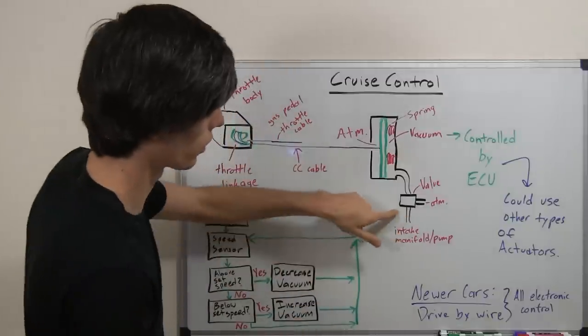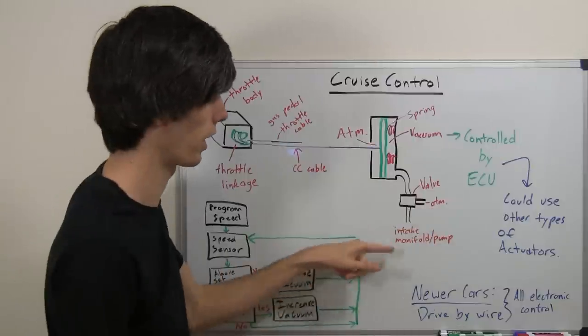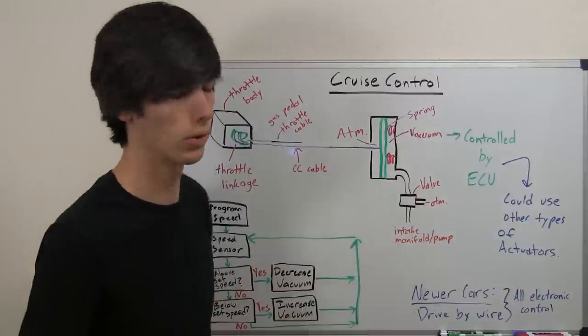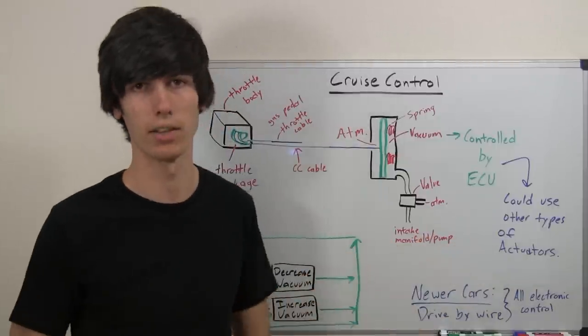So you can control the vacuum using a valve that can manipulate between atmospheric pressure and intake manifold, so that's where you're going to get your vacuum from, or you could have a pump even creating that vacuum.